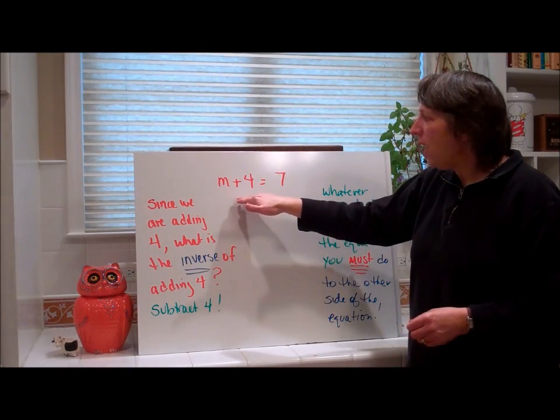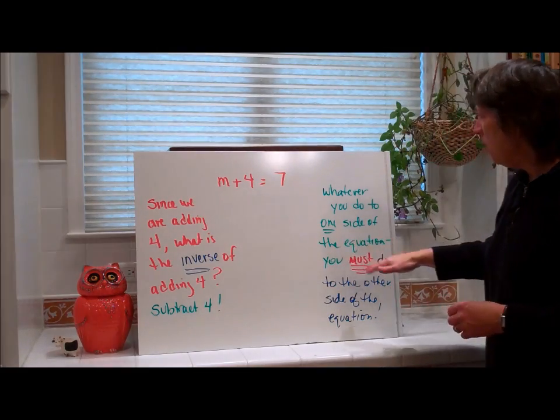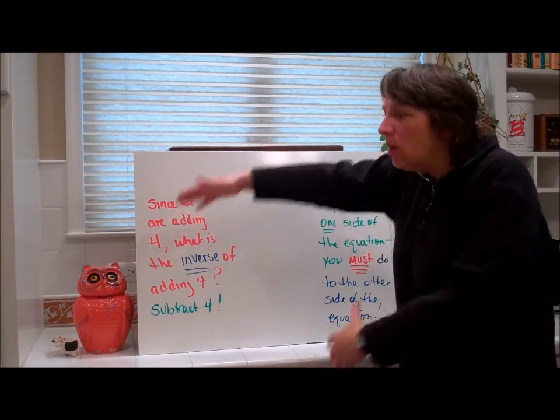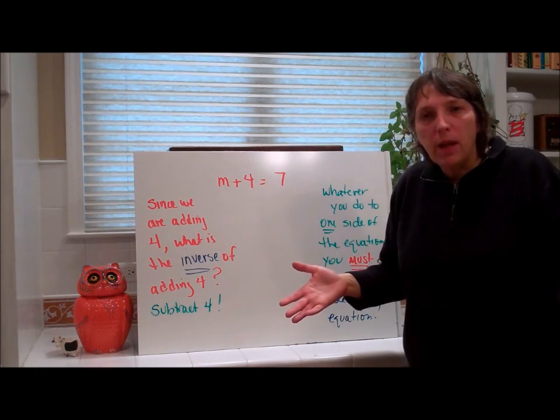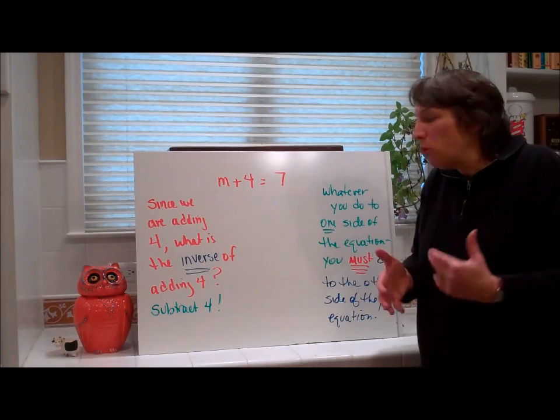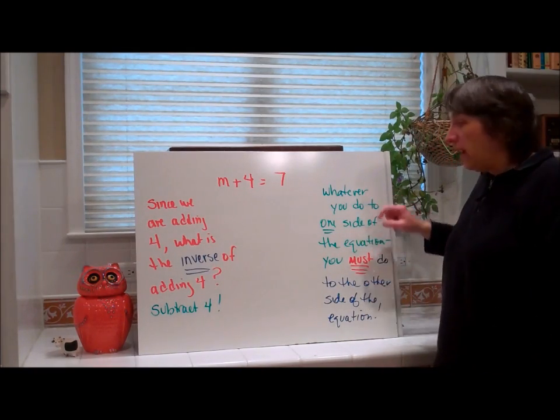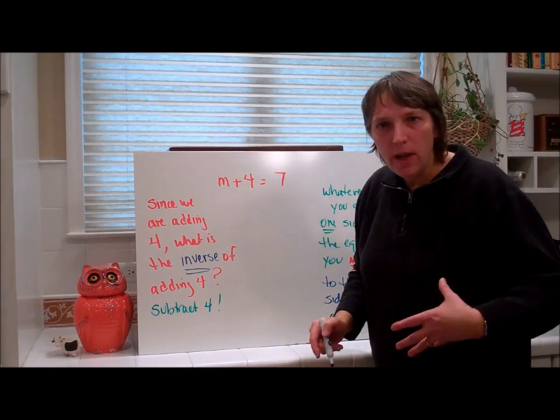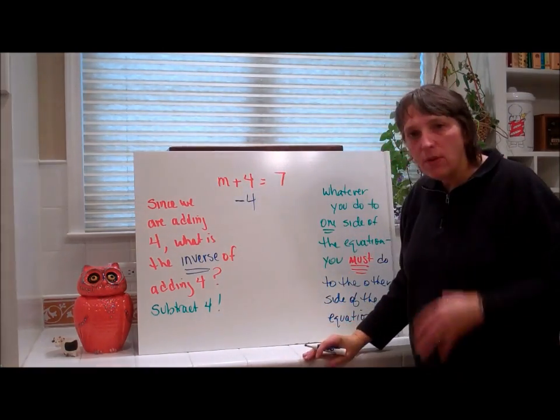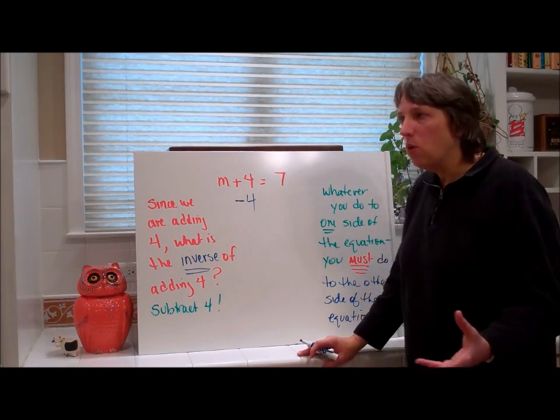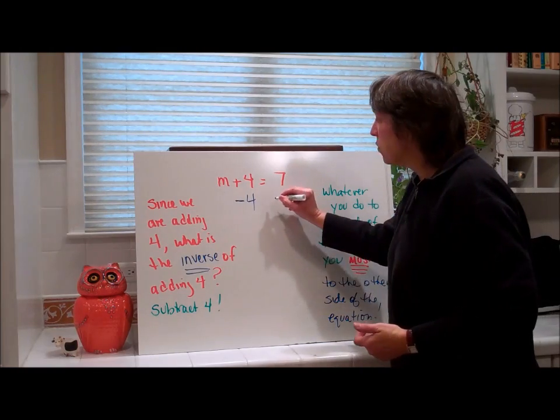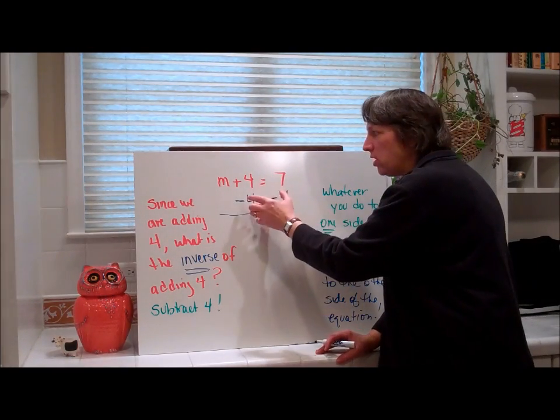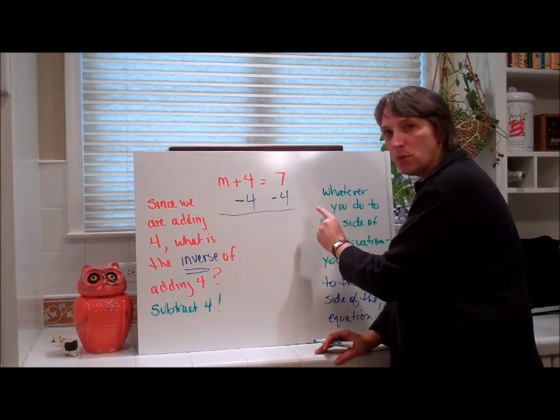So, we have to subtract 4 from this side. Now, you've heard me say this. Whatever you do to one side of the equation you must do to the other side of the equation. That allows us to manipulate it. Because if I don't, I'm not showing my work. I have to show someone what I'm doing. So, if I'm adding 4 to the m, how do I undo it? I subtract 4. Because the inverse of adding 4 is to subtract 4. I can't stop there. I have to subtract 4 from both sides. Notice how I'm showing my work. Vertical. You have to show it this way. You're subtracting 4 on the left side and you're subtracting 4 on the right side.